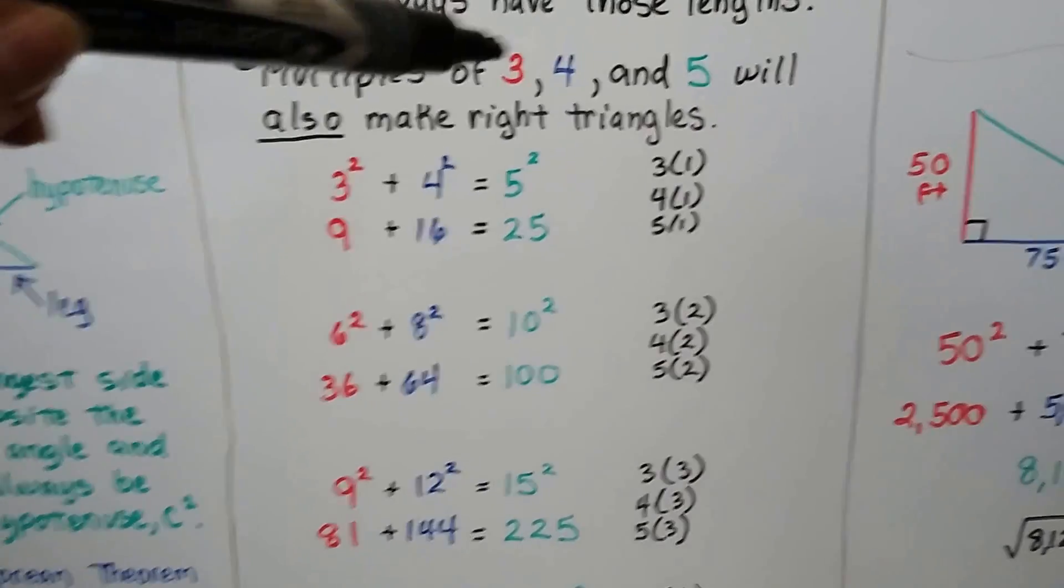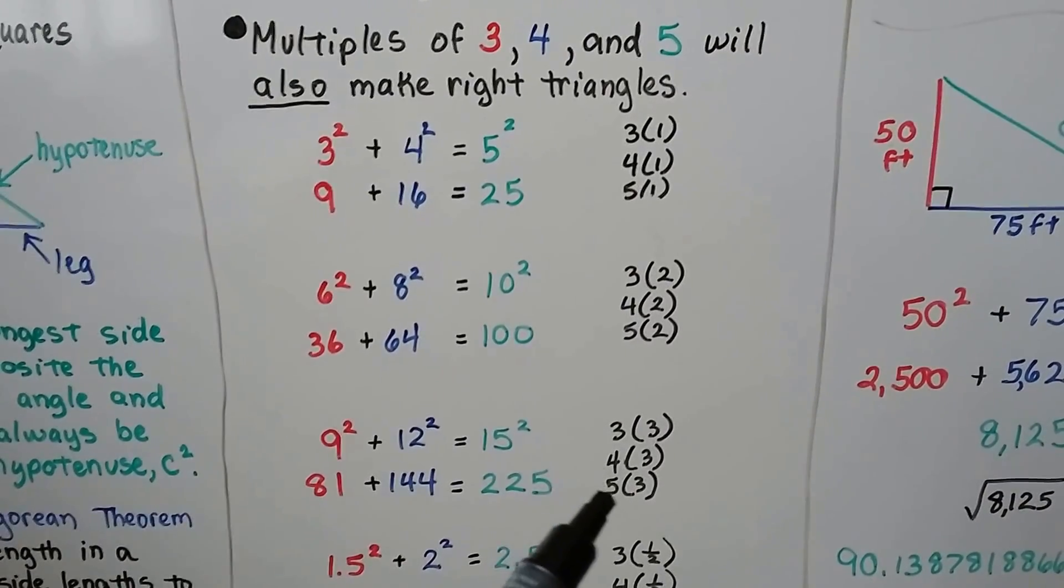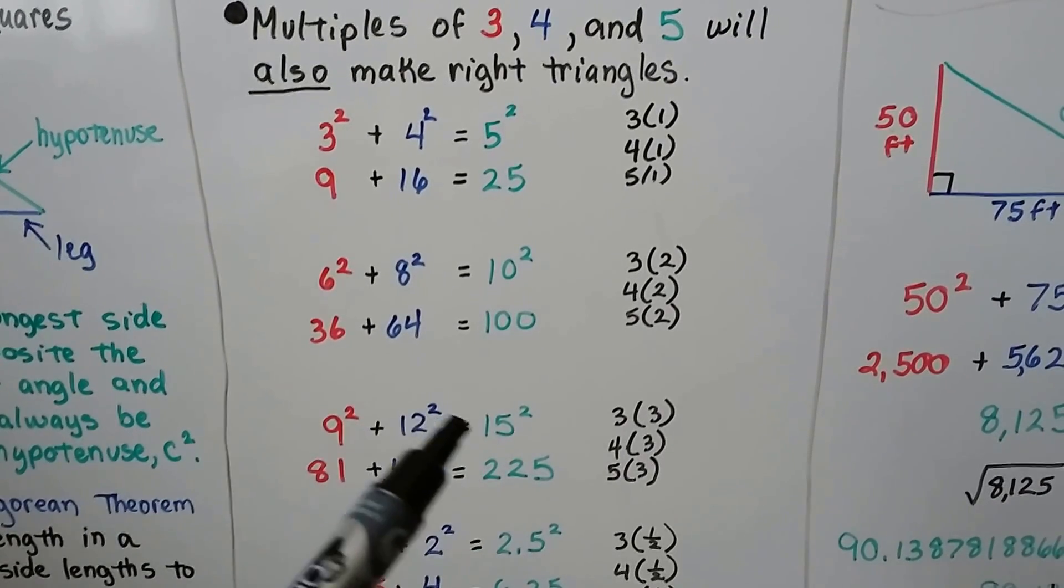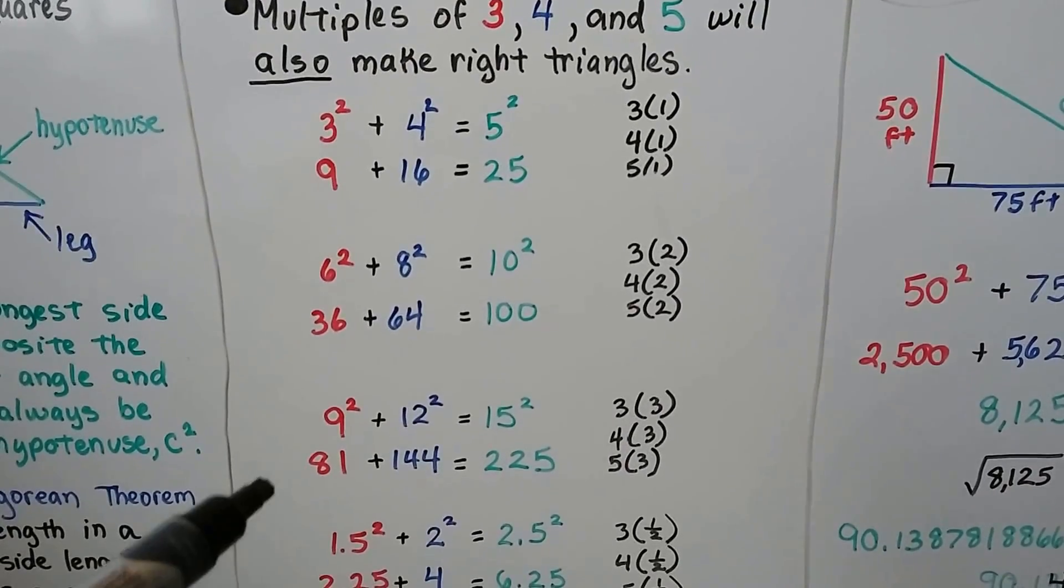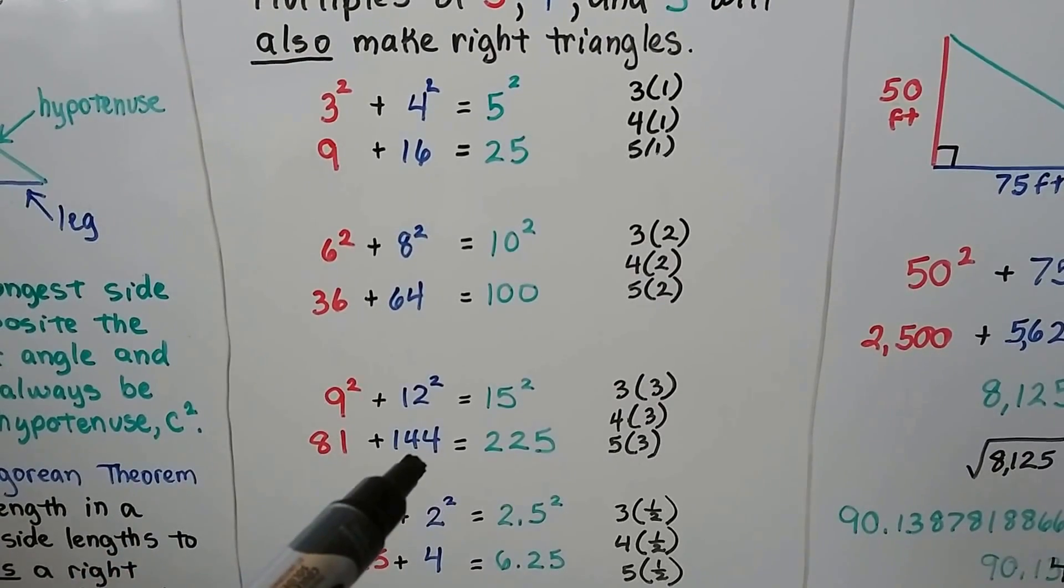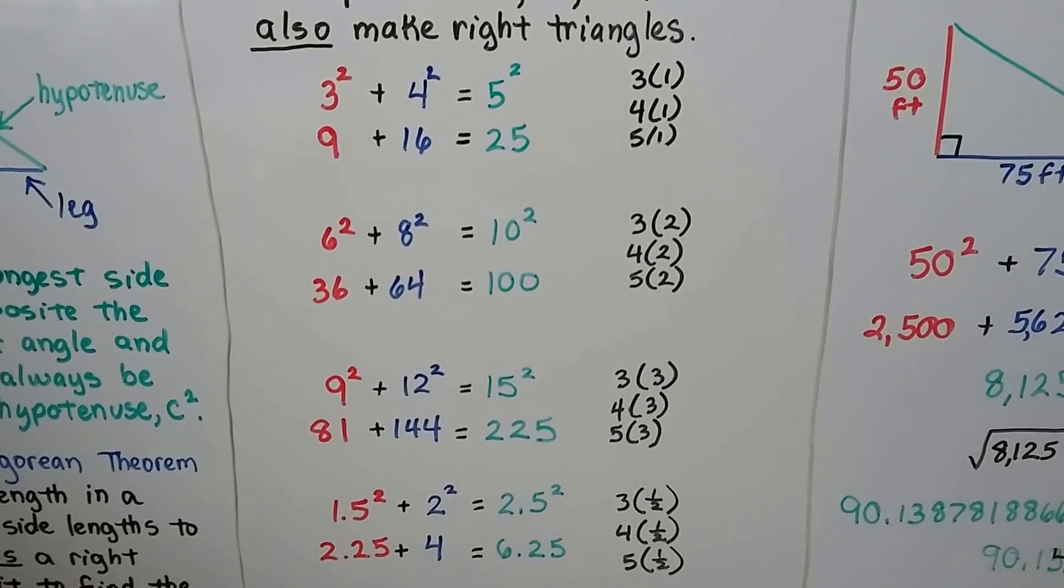We could also take the 3, 4, and 5, and multiply them by 3 to get a 9, a 12, and a 15. And if we square those, 9 squared plus 12 squared equals 15 squared. We'll get 9 times 9, which is 81, plus 12 times 12, which is 144. And it'll equal 15 times 15, which is 225.